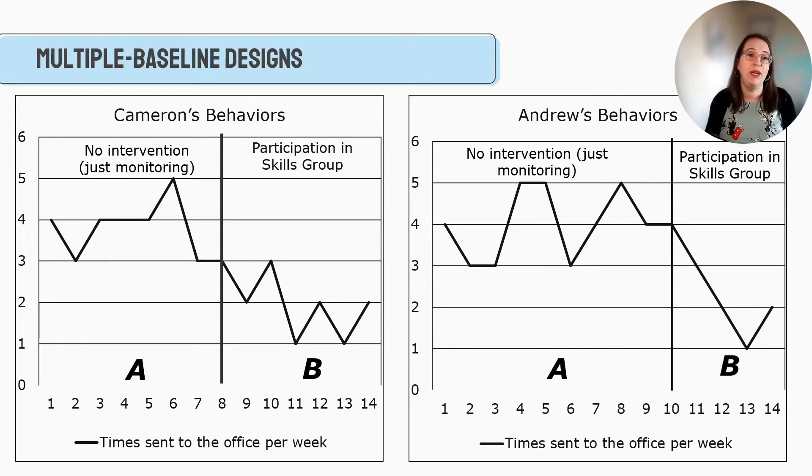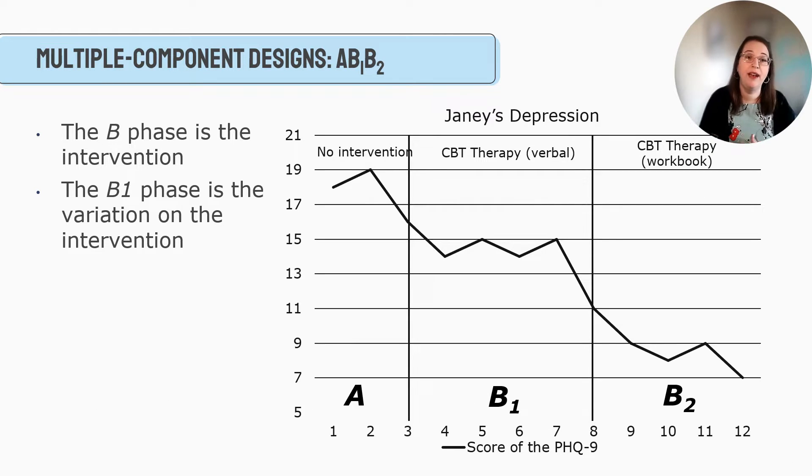We also have a multiple component design, and I've seen this a lot in jobs that I've worked. And so this is represented by A, B1, B2, or B3. It can keep going. So A, we start with our no intervention. Let's say Jeannie's coming in. We're administering the PHQ-9 and we're really monitoring her PHQ-9 score. We want to see if there's an improvement in her mental health depression as represented by her score on this tool. So we monitor for three weeks, no intervention. She just comes in. She completes the assessment. We don't necessarily start an intensive treatment. We're just monitoring how she's doing.